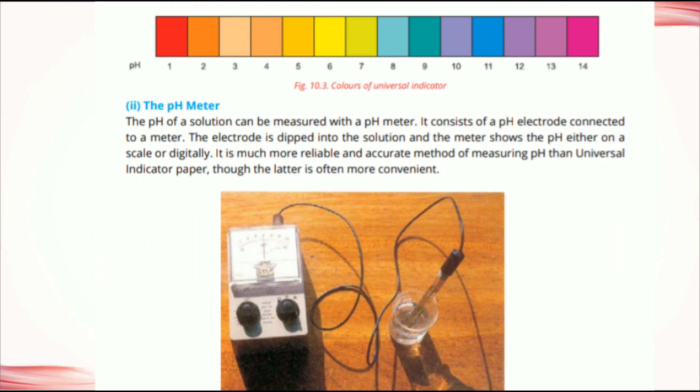The second method for finding the pH of a solution is the pH meter. With the help of a pH meter we can find the pH of a solution accurately. The pH of the solution can be measured with a pH meter, which consists of a pH electrode connected to a meter.